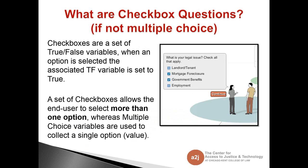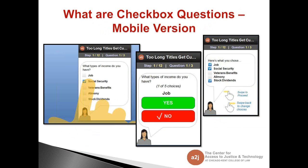So what is a checkbox if it's not multiple choice? A checkbox is basically a set of true-false variables — each separate field is a true-false variable. It allows end users to select more than one option, where multiple choice is only one option. The checkboxes can hold multiple values because each question — is your legal issue landlord-tenant, mortgage foreclosure, government benefit, unemployment — is simply a yes/no, true/false.